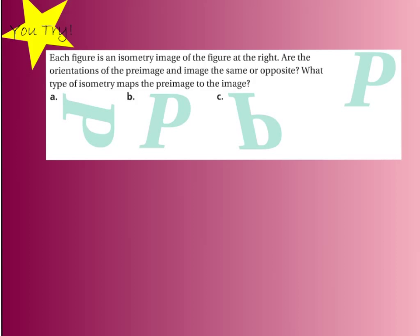Here's a you-try problem. You're starting with the letter P and looking at A, B, and C to determine whether their orientations are the same or opposite, and whether each is a translation, a rotation, a reflection, or a glide reflection.